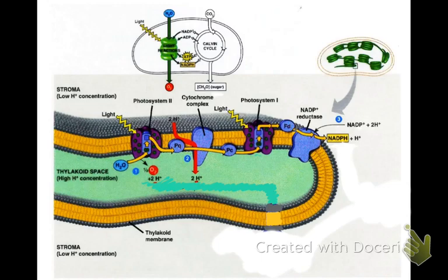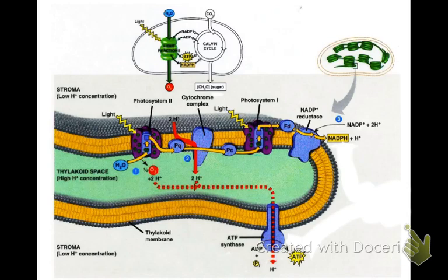Now let's deal with those hydrogens packed into the thylakoid space — again, a proton motive force. Those protons want to get out, and they only have one way out: they flow through what we call ATP synthase, and that energy is used to generate ATP. This enzyme acts like a rotary motor — it converts the proton motive force into mechanical energy through rotation. It is an amazing enzyme.